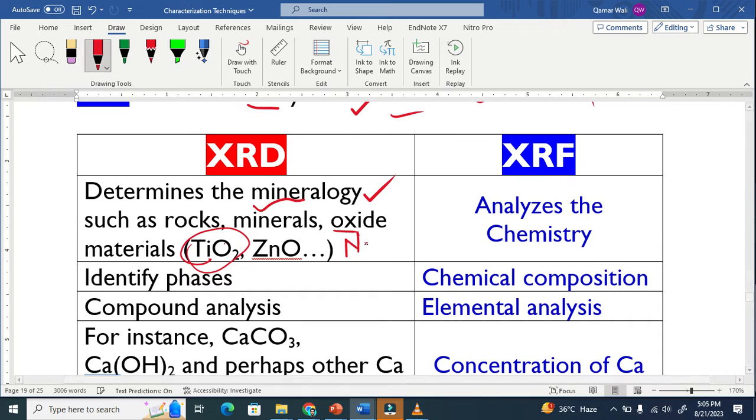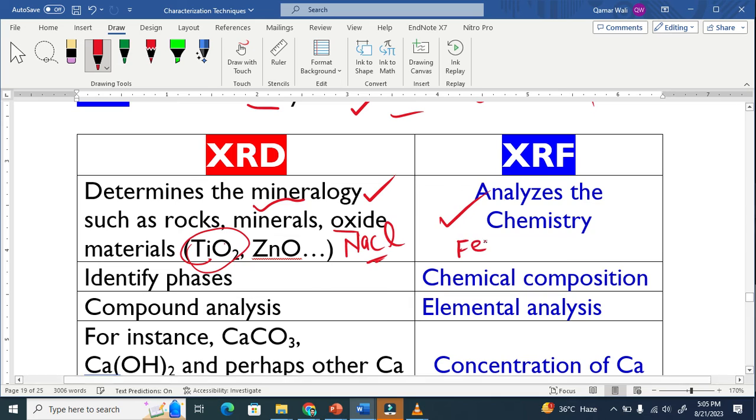It gives us information about sodium chloride, while XRF basically analyzes the chemistry. It gives us information about single elements, like the electronic configurations, the K shell, the L shell, the M, N. Those information we get from XRF analysis.